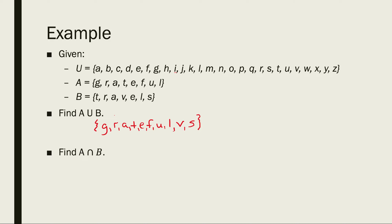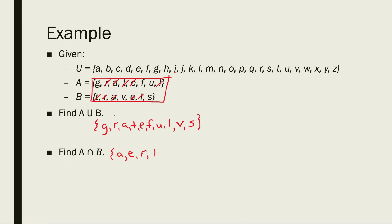For the last problem, we intersect A and B — looking for elements the two sets have in common. They both have an A, an E, an R, an L, and a T. So the intersection of the two sets contains those five letters: A, E, R, L, and T.